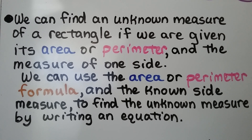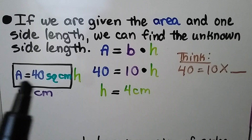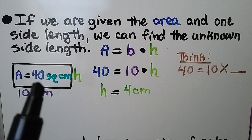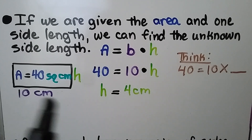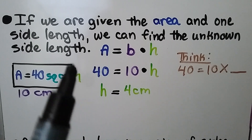We can use the area or perimeter formula and the known side measure to find the unknown measure by writing an equation. If we're given the area and one side length, we can find the unknown side length. We're given the area — it's equal to 40 square centimeters. We're given a side length of 10 centimeters. We're missing the height, h.